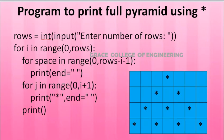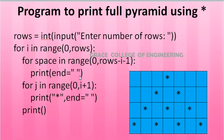Next is the program to print a full pyramid using stars. Rows is assigned from user input. For i in range(0, rows) handles rows. For space in range(0, rows - i - 1) handles the leading spaces. Print with end equal to a space character is used. Then for j in range(0, i+1) handles the columns for printing stars.